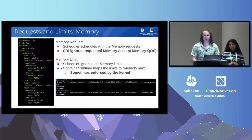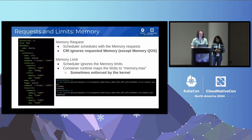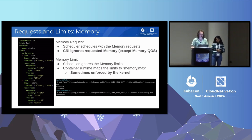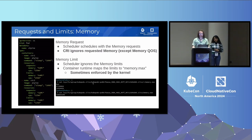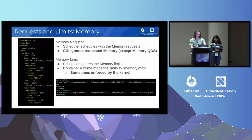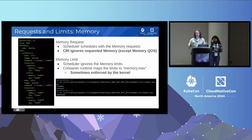A memory limit, on the other hand, the scheduler doesn't use at all. The container runtime will map the limits specified to memory.max, which is a file in the cgroup hierarchy. This is sometimes enforced by the kernel via OOM killing — if a container uses more than its allotted amount of memory, it may be OOM killed if the kernel is feeling memory pressure. Here we have two containers: one with a limit of 64 megabytes and one of 32, and you can see these values — the 67,000-something is the 64 megabytes, and the 33 is the 32 — mapped directly in the cgroup hierarchy.